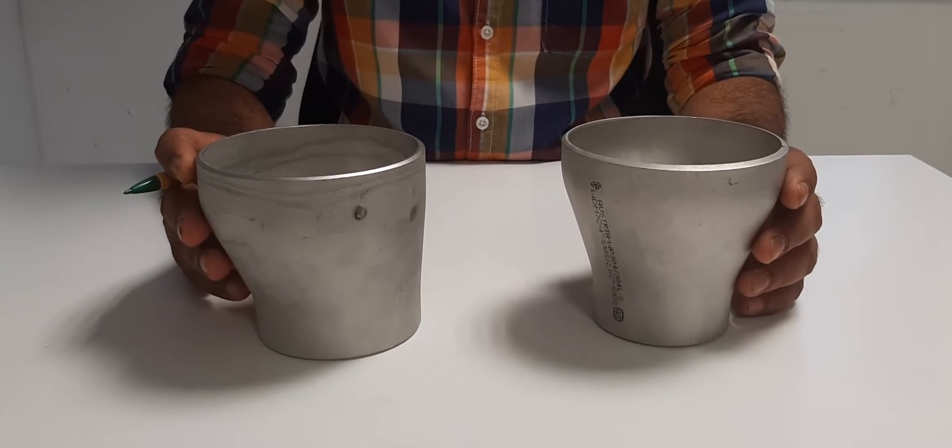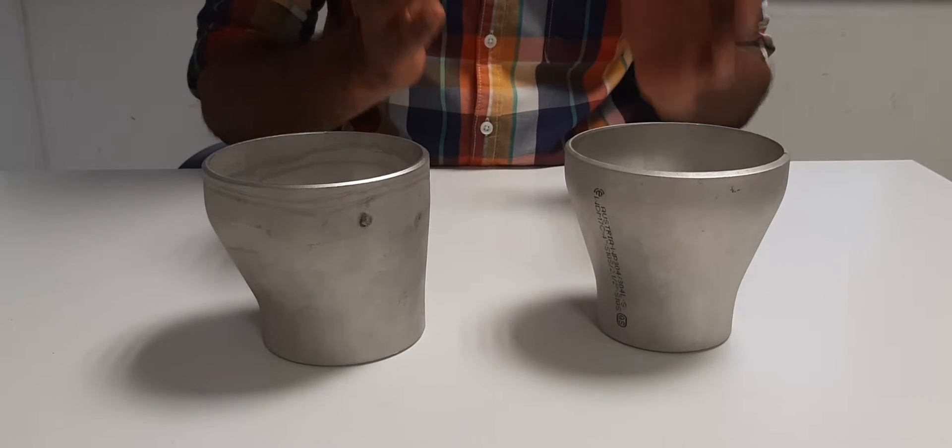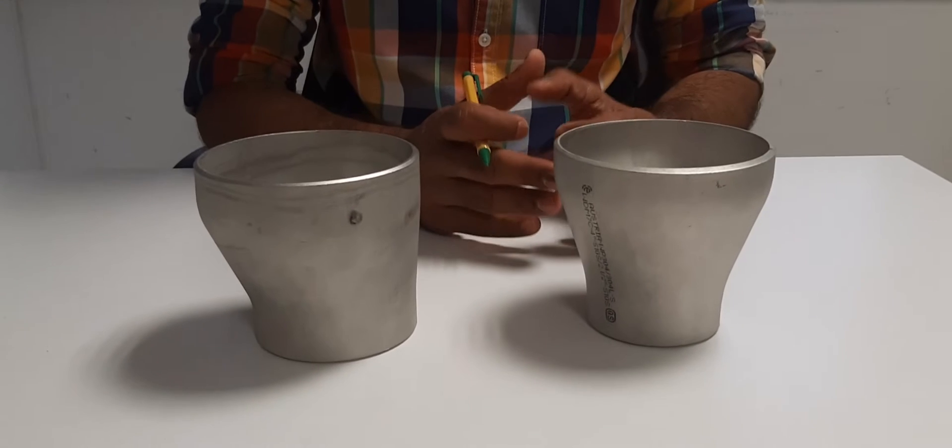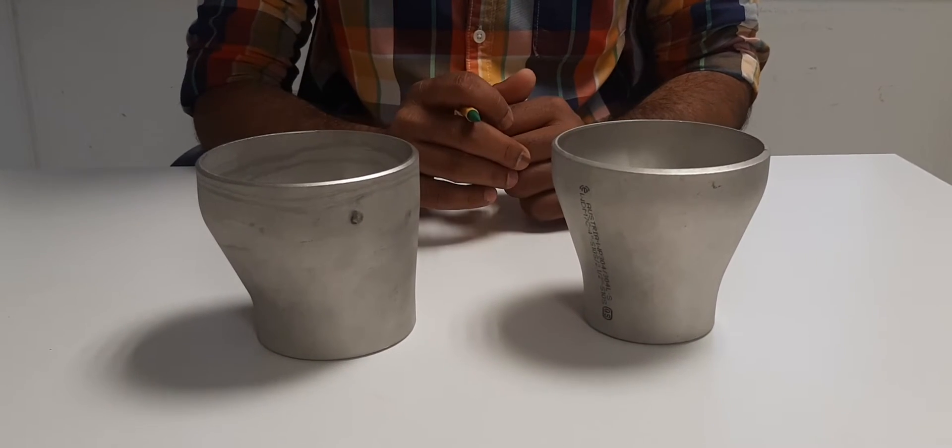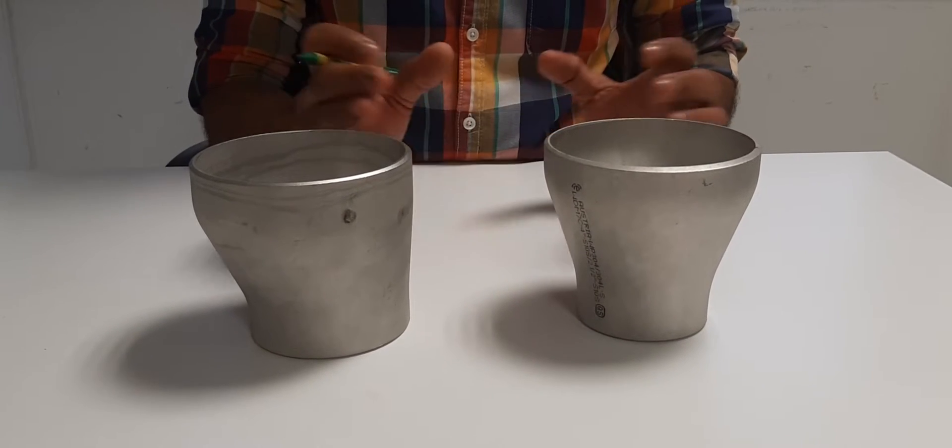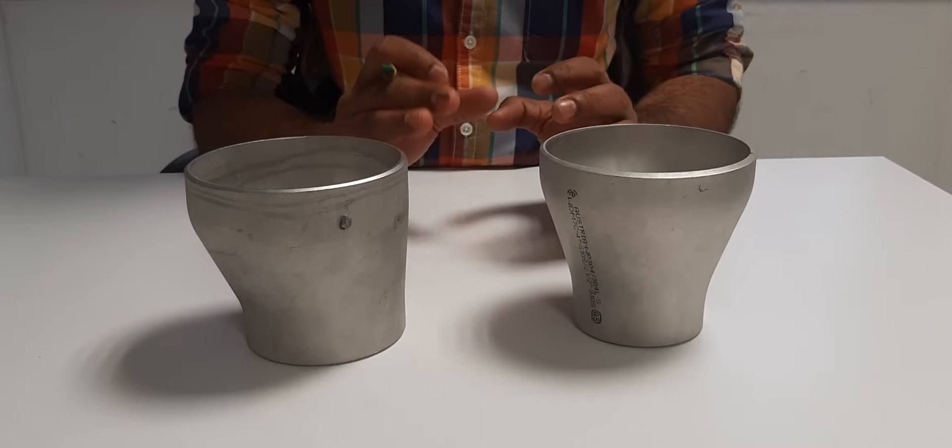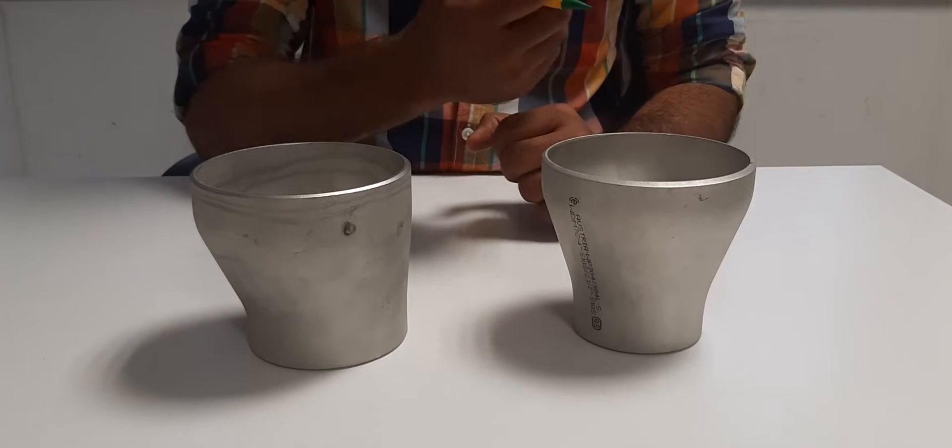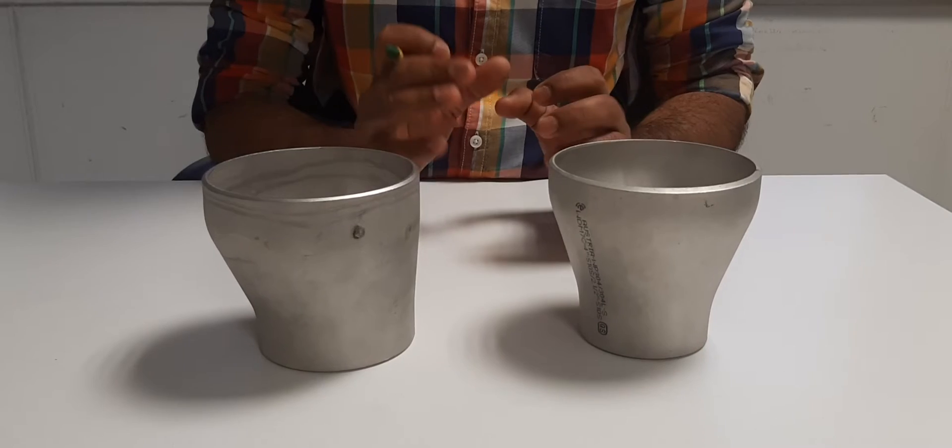Hi friends, today we will talk about what is the difference between concentric reducer and eccentric reducer. Both reducers are used to reduce the larger diameter of the pipe to smaller diameter of the pipe.